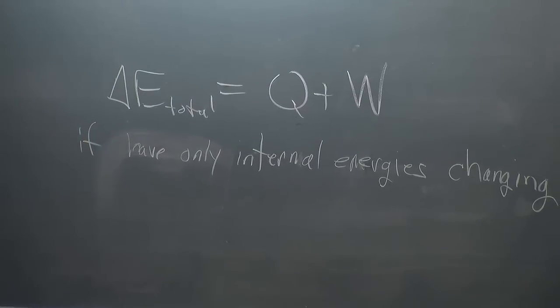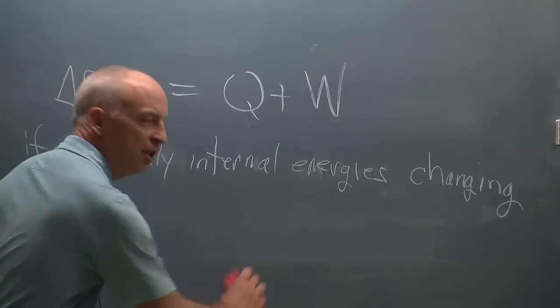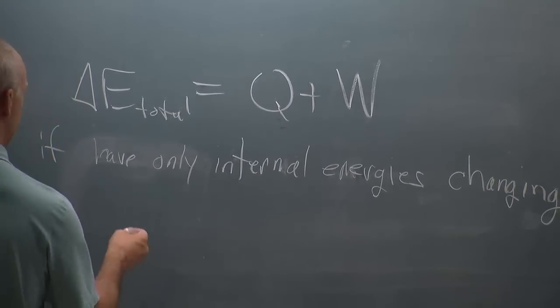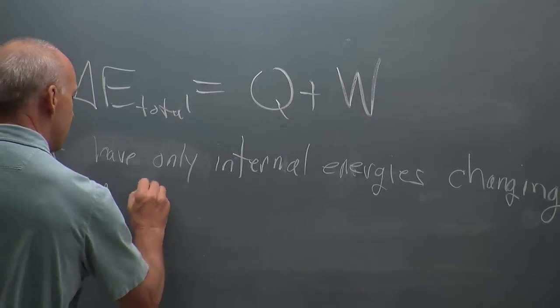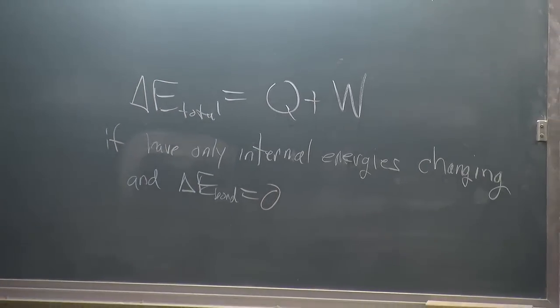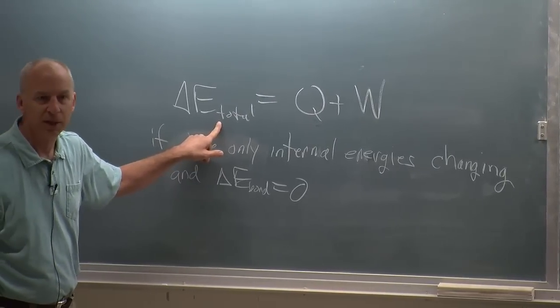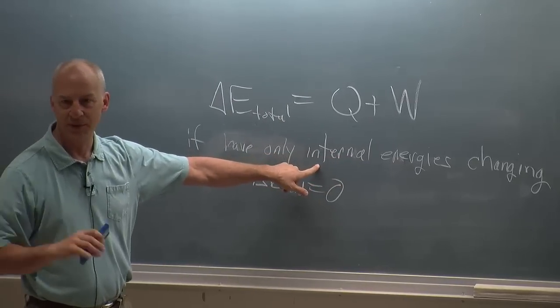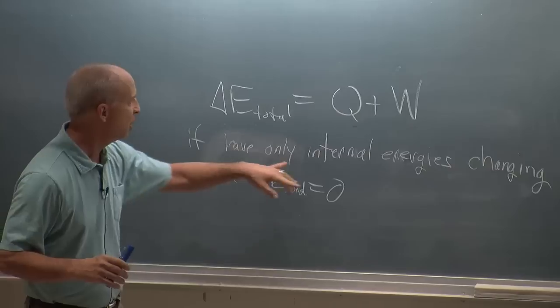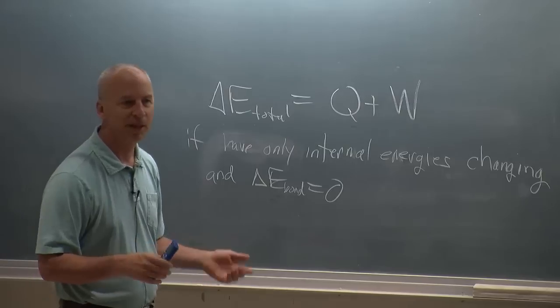So I'm going to pretend that we don't have gravitational potential energies changing, that we don't have kinetic energy changing, that we're not talking about this thing suddenly starting to rotate. So no rotational kinetic energy changing, and no bond energy changes. In that case, this E total only includes thermal energy. It only includes internal energies because of the first one. You don't have to include any energies that aren't changing.